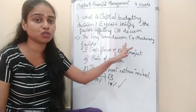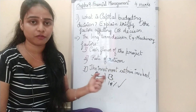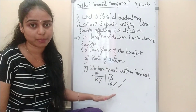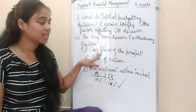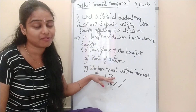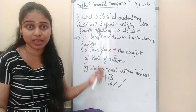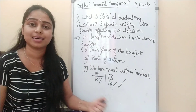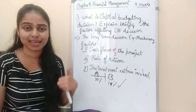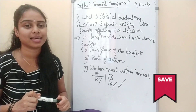To summarize, capital budgeting decisions are the long-term decisions taken by an organization, such as replacing a machine or expanding a new branch. The three factors to consider are: first, cash flows of the project; second, rate of return; and third, investment criteria involved. Please revise what we learned today. If you found this video useful, give it a like, share it with your friends, and subscribe to the channel. See you in the next video — take care, bye, namaste.